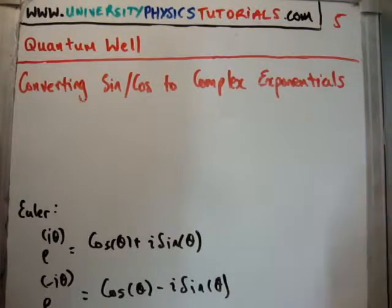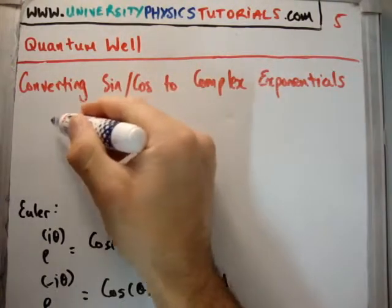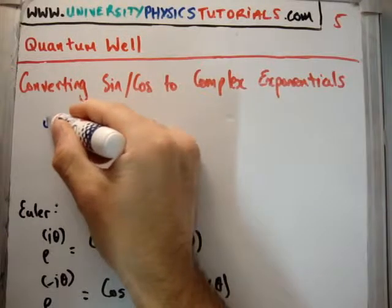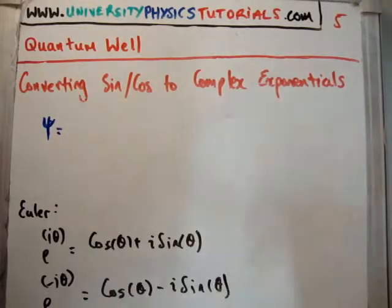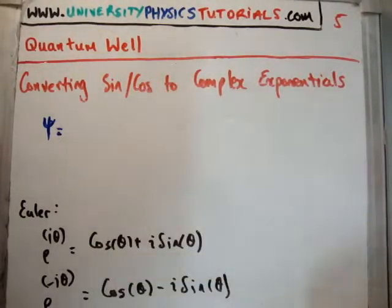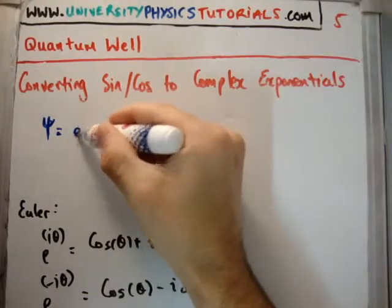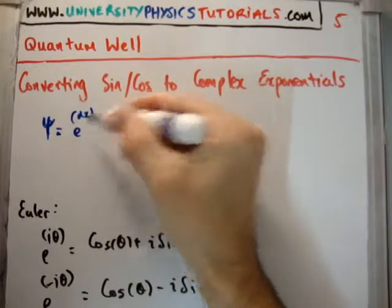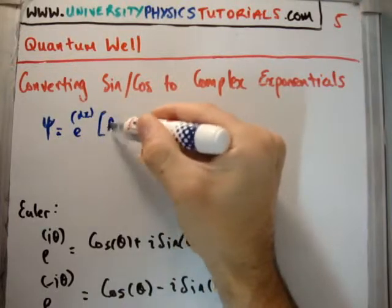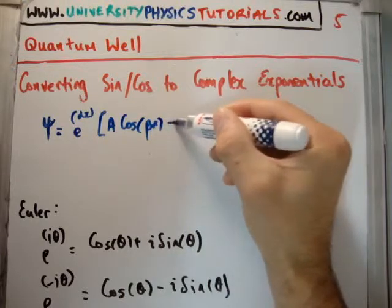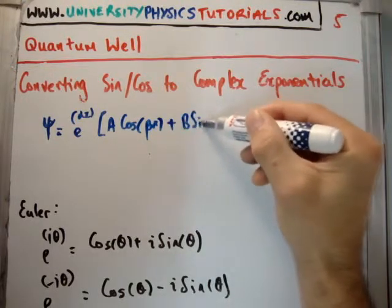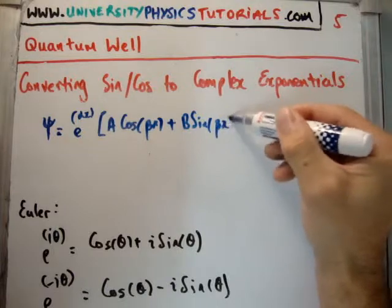So why are we doing this? Well, we're doing this because in that particular video number 4, I showed you that the general solution to our wave function, which is, having solved the Schrodinger equation, is going to be E to the alpha x times a cos beta x plus b times the sine of beta x.